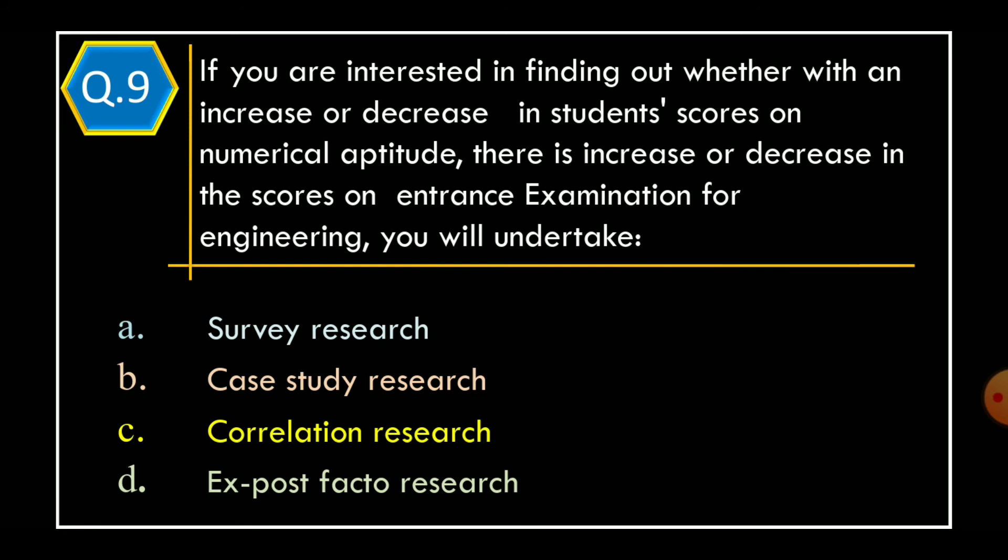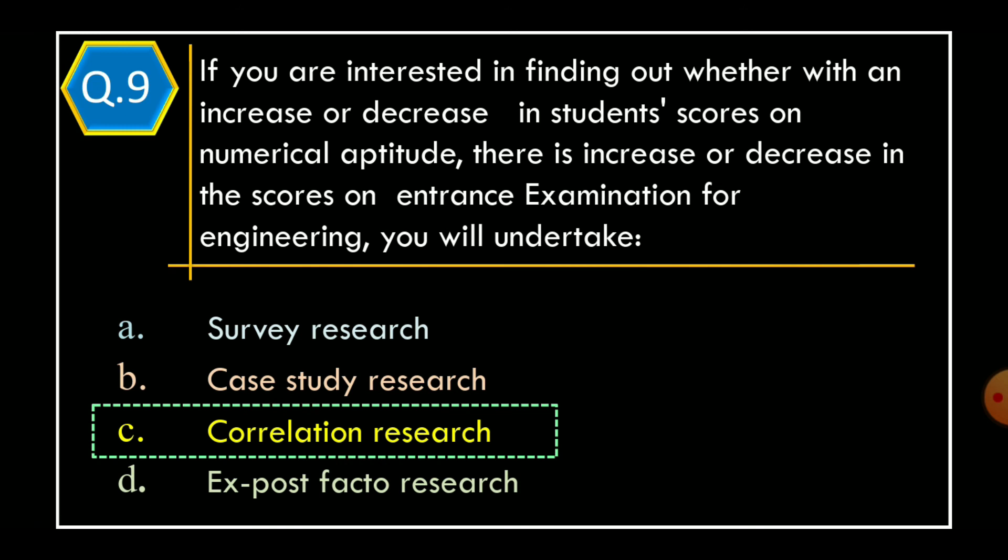Question 9. If you are interested in finding out whether with an increase or decrease in student scores on numerical aptitude there is an increase or decrease in the score on entrance examination for engineering, you will undertake: Option A, survey research; Option B, case study research; Option C, correlation research; Option D, ex-post facto research. The correct option is Option C, correlation research.